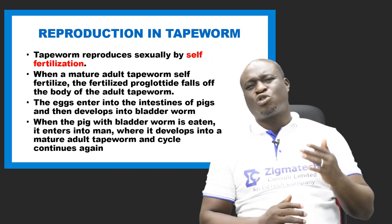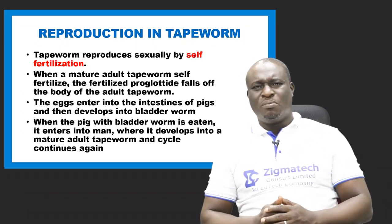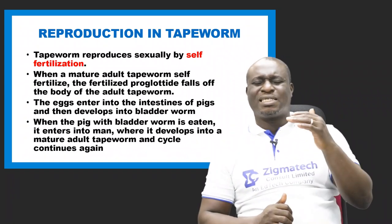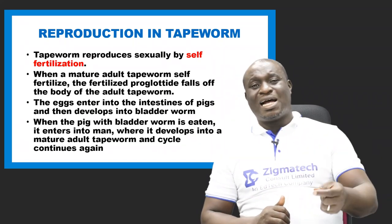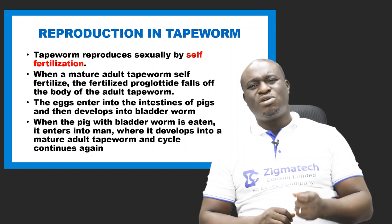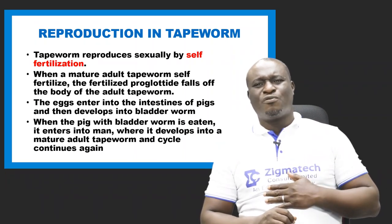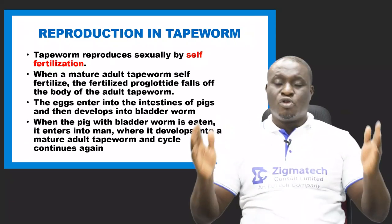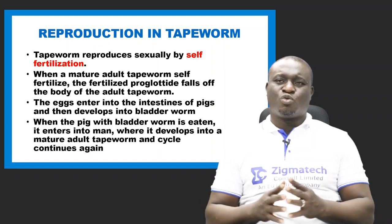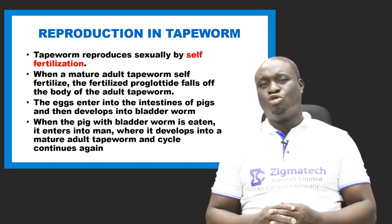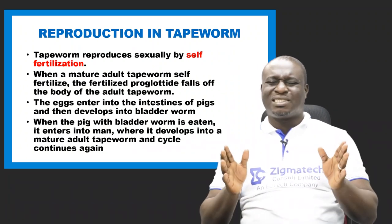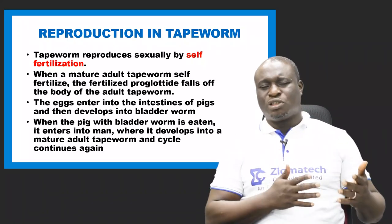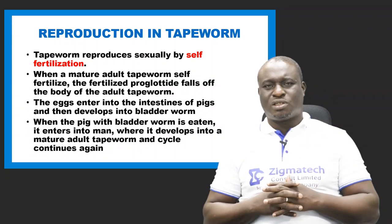We can also observe reproduction in tapeworm. Tapeworms are hermaphrodites — an organism that can carry out self-fertilization because of the presence of both male and female reproductive organs, which can produce both male and female gametes. Tapeworm reproduces sexually by self-fertilization because it has both the male and female reproductive organs.